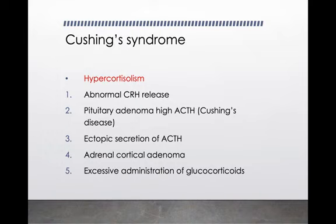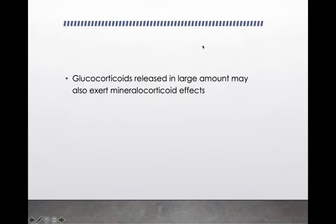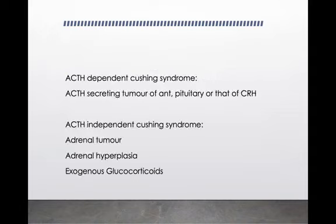Additionally, if excessive glucocorticoids are administered to a patient — since glucocorticoids have anti-inflammatory effects and are given in many conditions to reduce inflammation — this excessive administration can also lead to Cushing syndrome. Glucocorticoids do have mineralocorticoid activity, and if released in abnormal amounts, they can exert a mineralocorticoid effect.